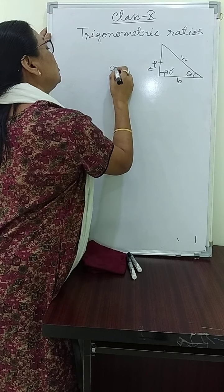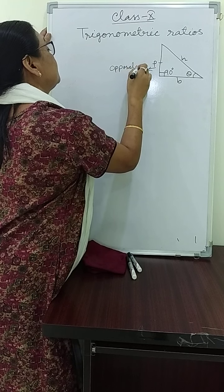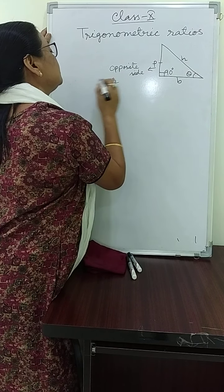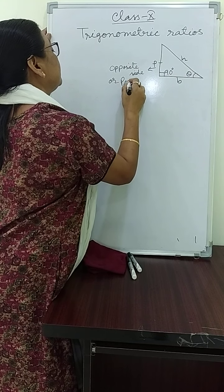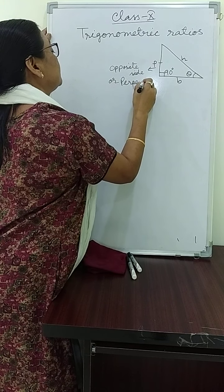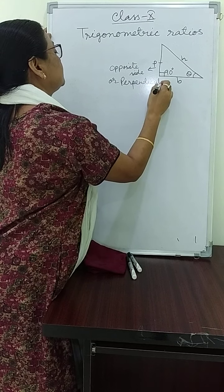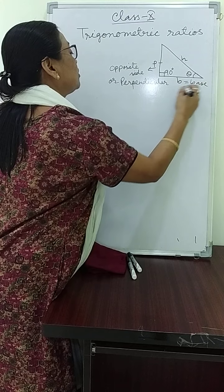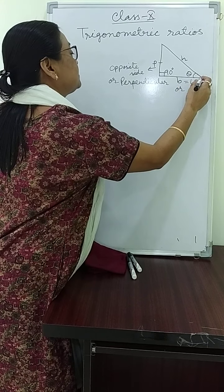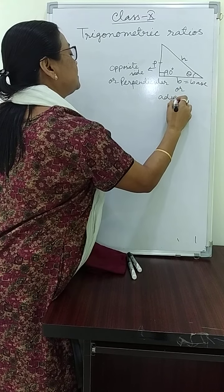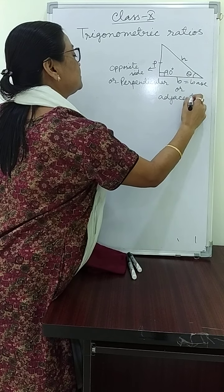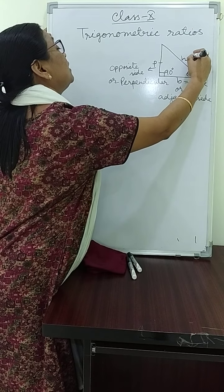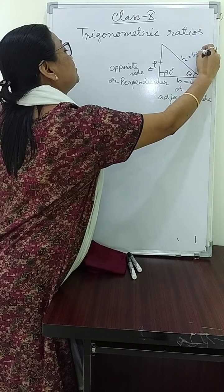So with respect to theta, we will name the three sides. This is called the hypotenuse. This is called the base or the adjacent side. And this one is called the altitude or opposite side.